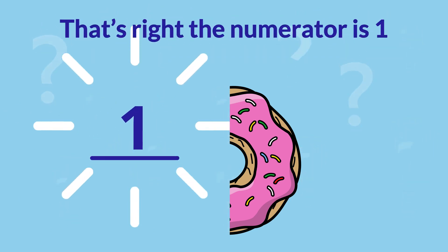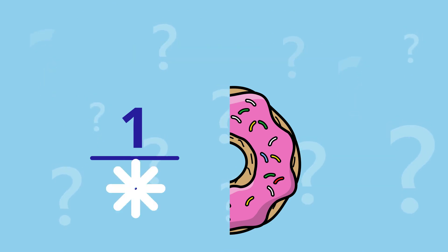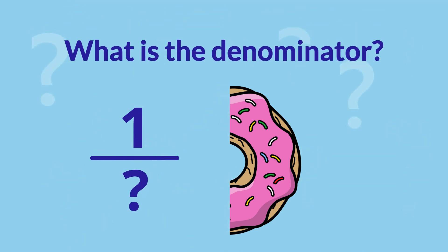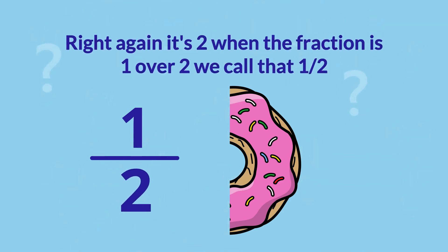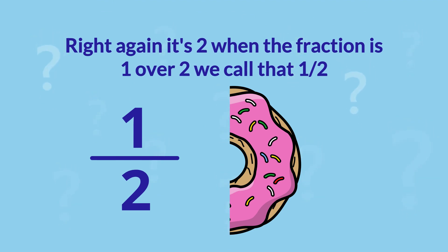That's right! The numerator is 1. What is the denominator? Right again, it's 2 when the fraction is 1 over 2. We call that a half.